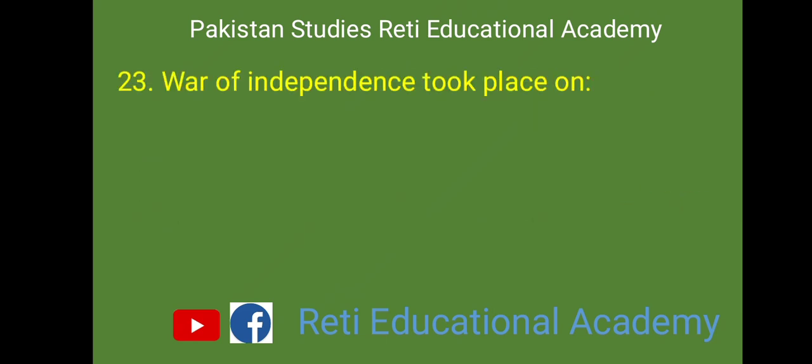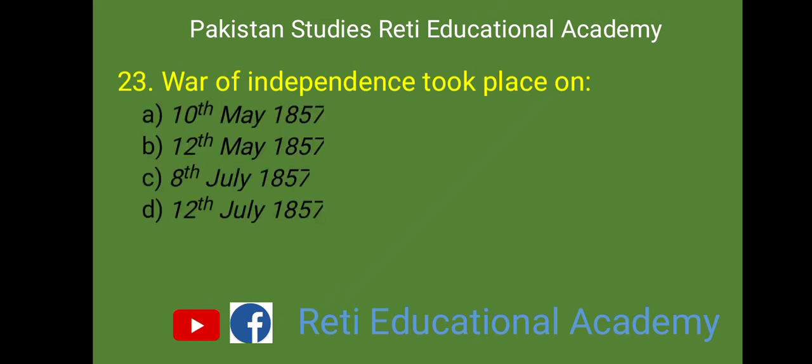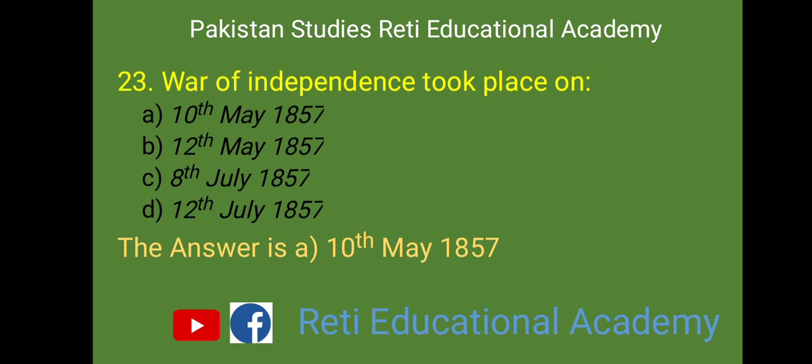MCQ number 23: War of Independence took place on. A. 10th May 1857, B. 12th May 1857, C. 8th July 1857, D. 12th July 1857. And the right answer is A. 10th May 1857.